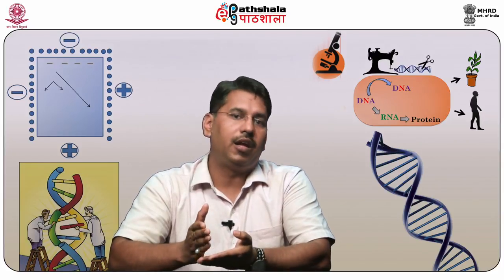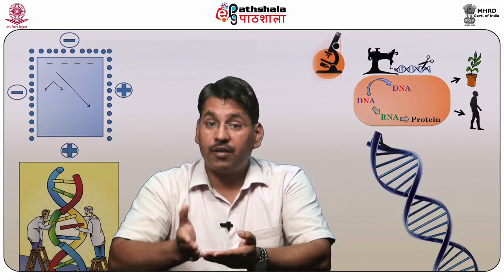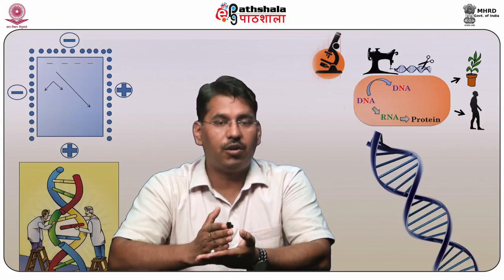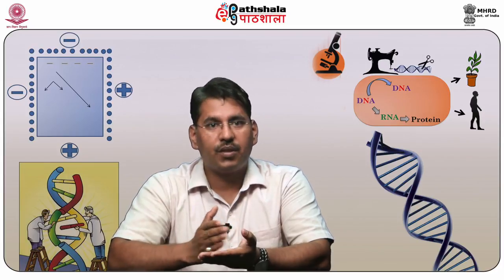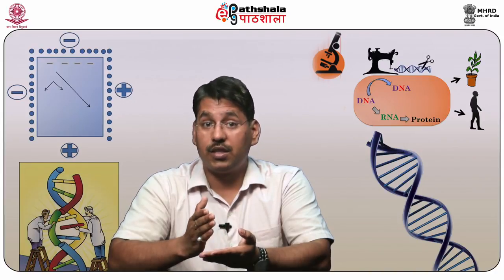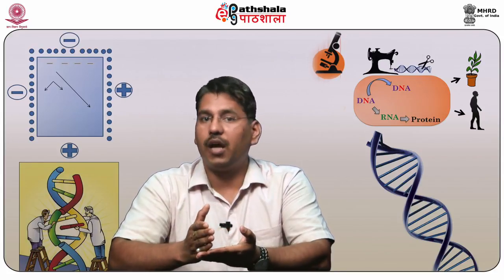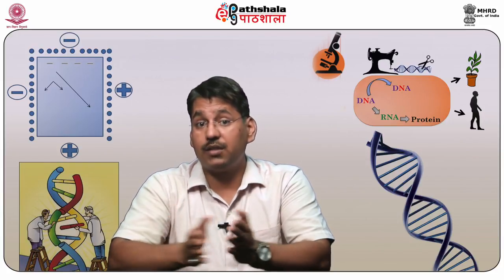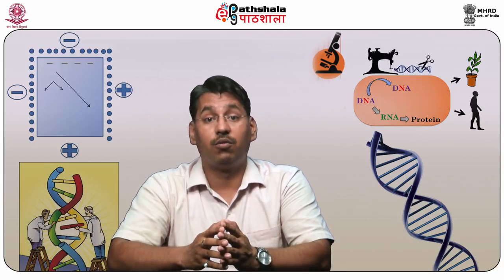The plasmid pEMBL 8 was made by transferring a 1300 base pair fragment of M13 into the plasmid pUC8 vector. This piece of M13 in pEMBL 8 contains signal sequences recognized by the enzyme that converts the normal double-stranded M13 molecule into single-stranded DNA before secretion of new phage particles. The signal sequence remains functional even though detached from the rest of the M13 genome. When normal M13 is used as the helper phage, it provides the necessary replicating enzymes and phage coat proteins.